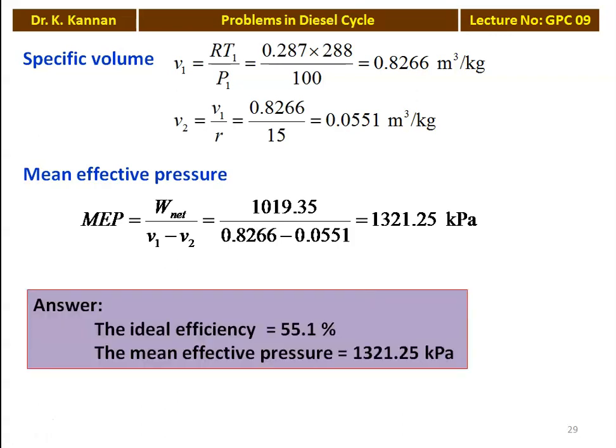The answers to the problem: the ideal cycle efficiency is 55.1% and the mean effective pressure is 1321.25 kilo Pascal.